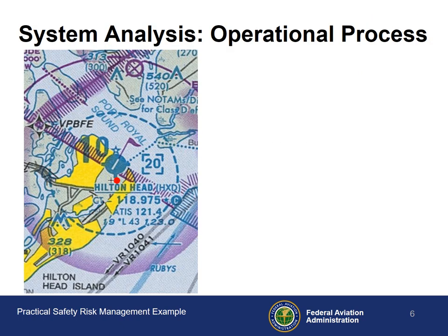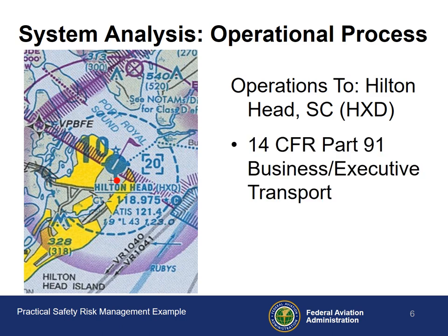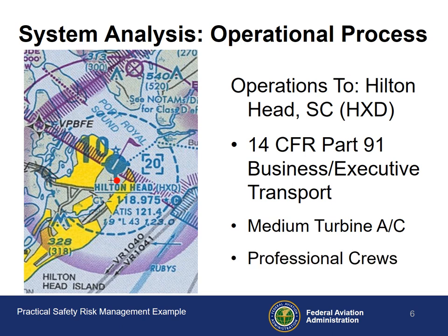The SRM workflow starts with system analysis, which in turn starts with identifying the operational process, as outlined in Appendix 1 of the AC as amended. The level of detail is only that needed to identify reasonably foreseeable hazards or to address hazards already identified. In this case, the flight operations are being planned into the Hilton Head, South Carolina Airport. The operations are being conducted under 14 CFR Part 91 by a corporate flight department transporting company executives to business activities, in medium-turbine airplanes by a professional air crew. From here, we'll go through a brief description and analysis of the system, the environment, and the operational tasks.